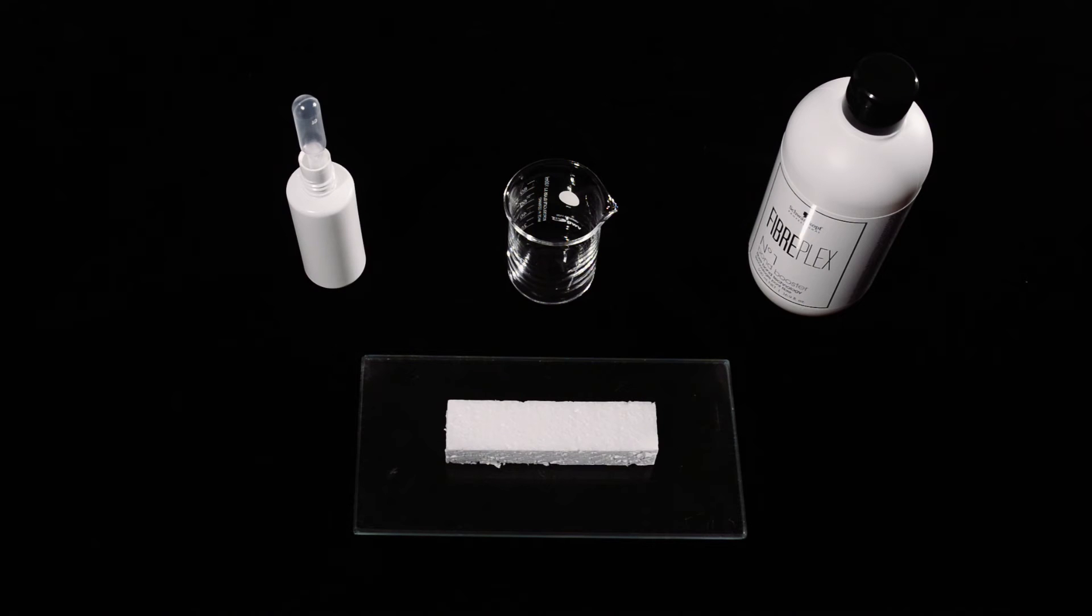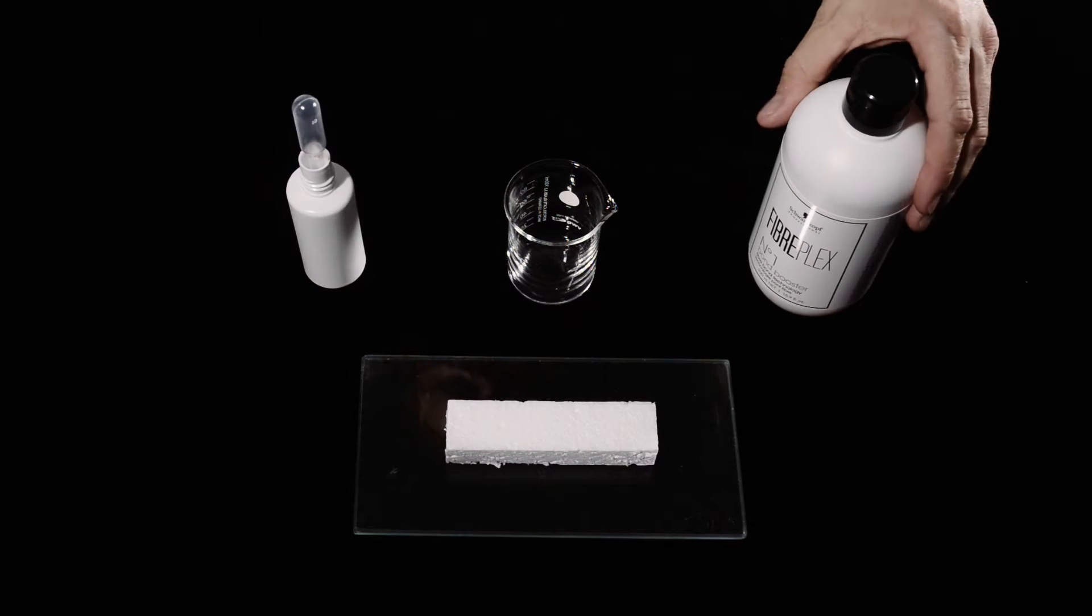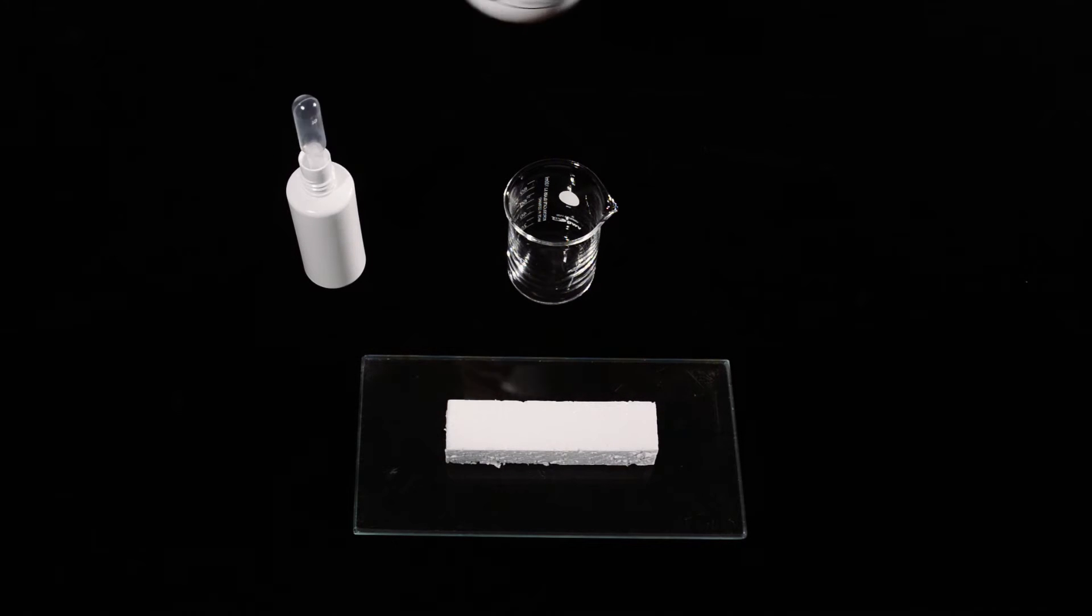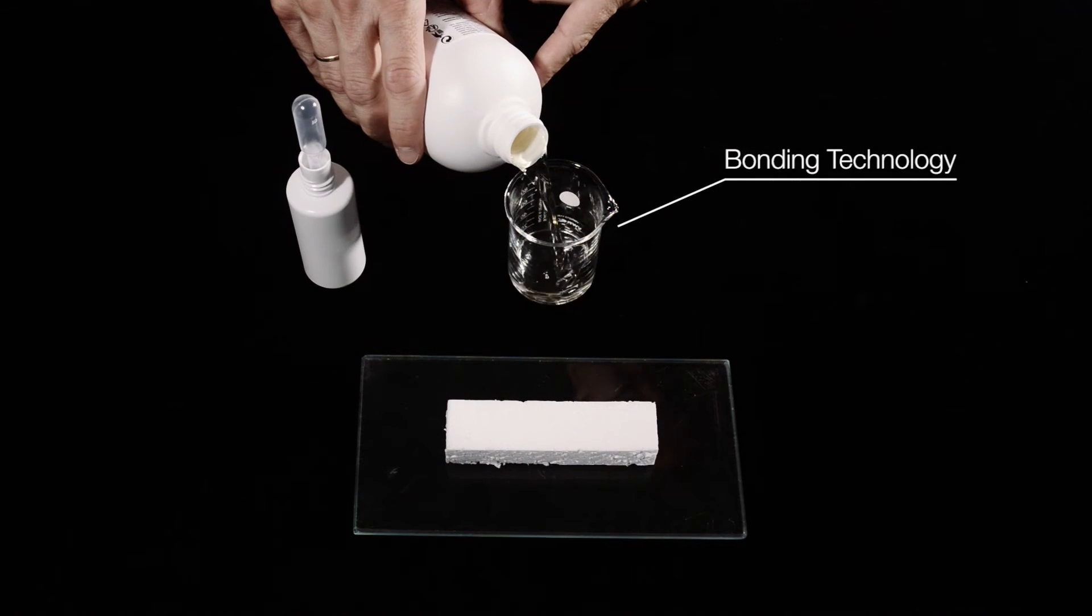Bonds are interlinking the hair matrix which is stabilizing fibrils and the inner hair structure. These bonds are damaged during chemical treatments, leaving the hair extremely damaged and weak.